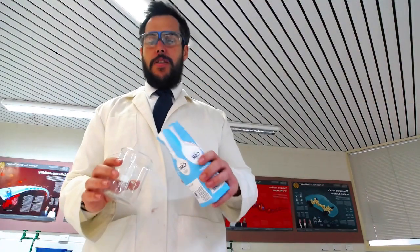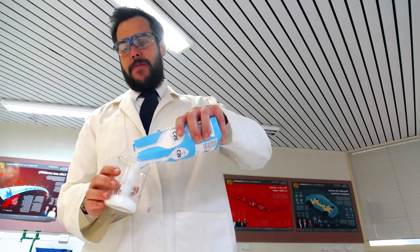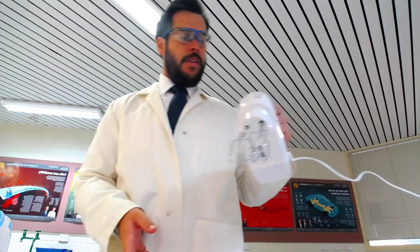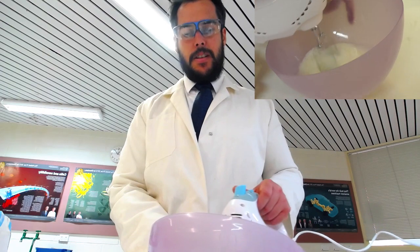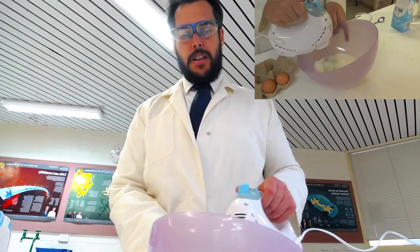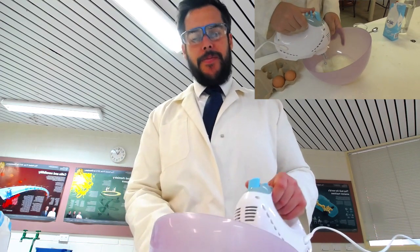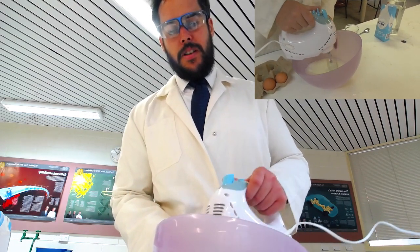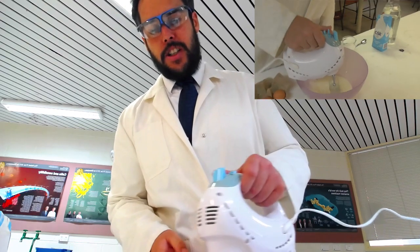Measure out 220 grams of sugar. Continue mixing your egg whites until they are of a smooth consistency. Get your partner to add the sugar in slowly.